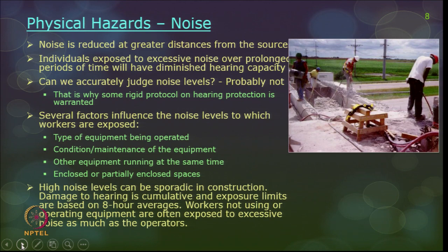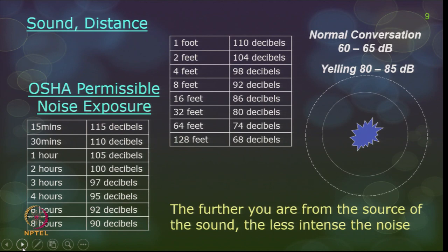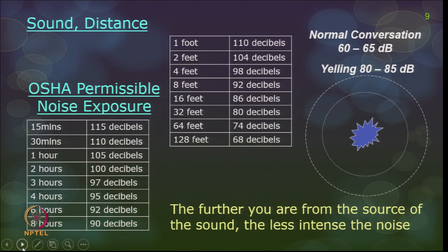High noise levels can be sporadic in construction. Damage to hearing is cumulative, but exposure limits are based on 8-hour averages. Noise levels are measured in decibels. Per OSHA standards: 90 dB for 8 hours is the permissible limit; 92 dB for 6 hours; 95 dB for 4 hours; 97 dB for 3 hours; 100 dB for 2 hours; and 115 dB for 15 minutes. Normal conversation is 60–65 dB, while yelling is 80–85 dB.